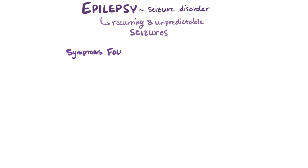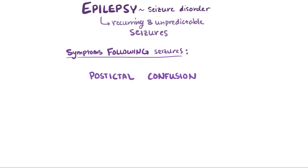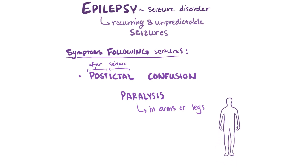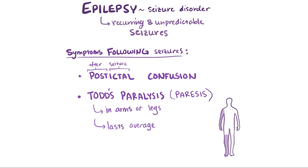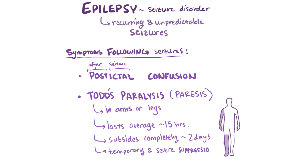Following a seizure, patients sometimes experience certain symptoms like confusion, called post-ictal confusion, which means after-seizure confusion. Patients might also experience paralysis affecting the arms or legs, usually limited to one side of the body — this is known as Todd's paralysis or Todd's paresis — and can last for quite a while, on average about 15 hours, usually subsiding completely after two days. The precise mechanism behind Todd's paralysis isn't currently well understood, but is thought to be the result of temporary but severe suppression of activity of the area in the brain affected by the seizure.